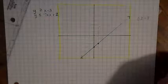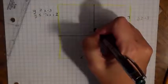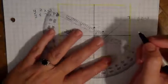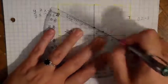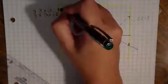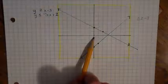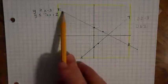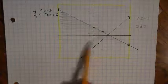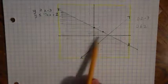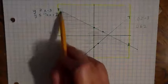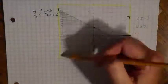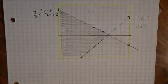Next I graph the second line: y is less than or equal to negative one-half x plus 2. I start at 2 and go down 1 and over 2. This also has an or equal to, so I graph it with a solid line. Plugging in (0, 0), I get 0 is less than or equal to 2, which is true — so I shade this side of the line. The area where the shading overlapped is the solution region, so I come in and make that darker.